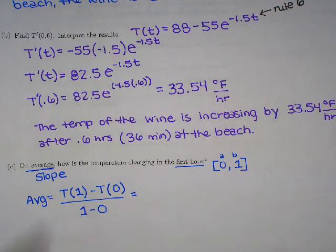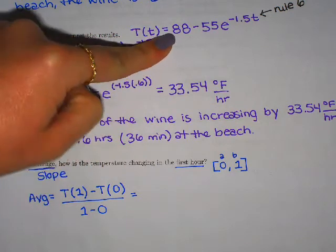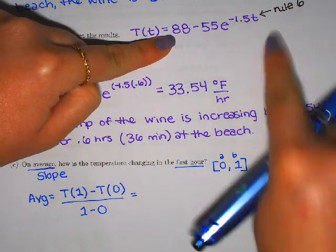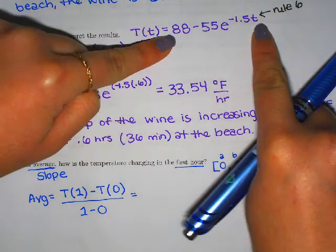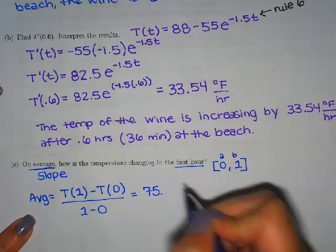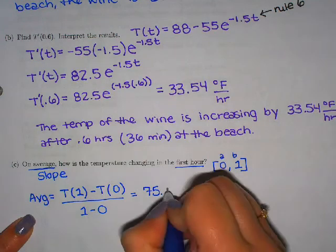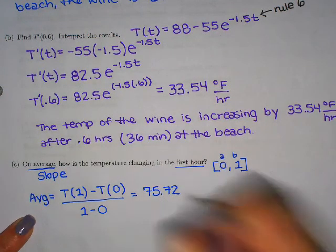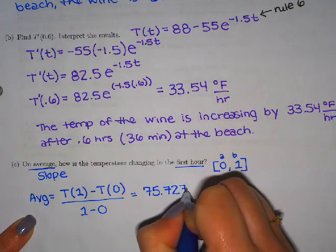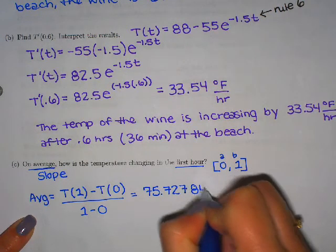So I'm plugging into the original for these because I'm looking at Y values. So I'm looking at this original function here. I'm doing 88 minus 55e to the negative 1.5 times one, plugging into the original. And what you should get is 75 point, and it keeps going on for a really long time. I'm going to write down as many numbers as I can because on WebAssign, you cannot round until your final answer.